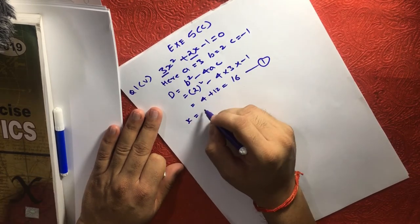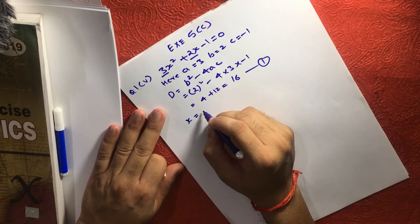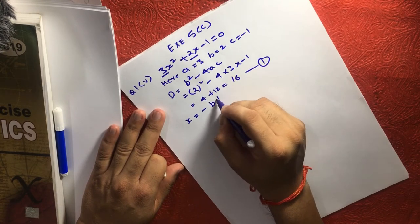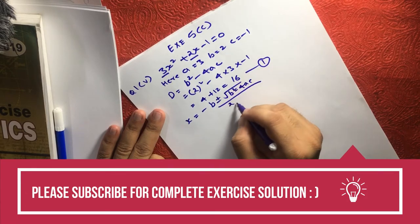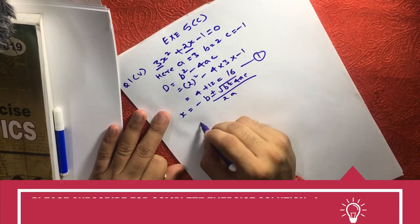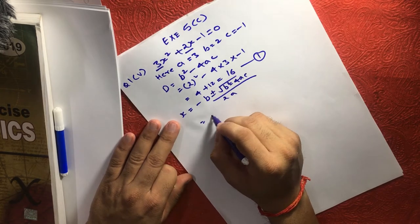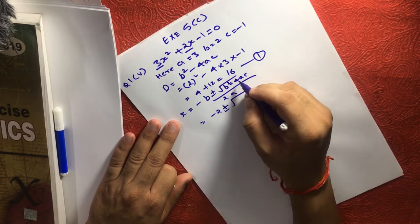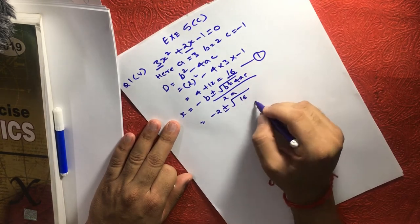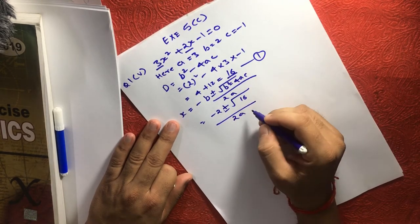Now, we have a formula x is equal to minus B plus minus square root of B square minus 4AC oblique 2A. If we solve this, this will become minus 2 plus minus square root of B square minus 4AC, we already know which is 16, so 16 oblique 2A.